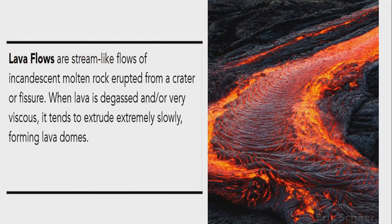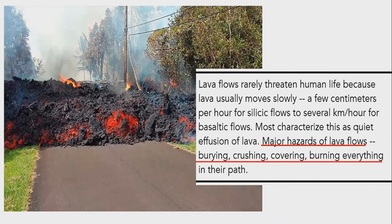The first one is lava flow. Lava flows are stream-like flows of incandescent molten rock erupted from a crater or fissure. When lava is degassed or very viscous, it tends to extrude extremely slowly, forming lava domes — just like what you can see in the picture on the right side of your screen.